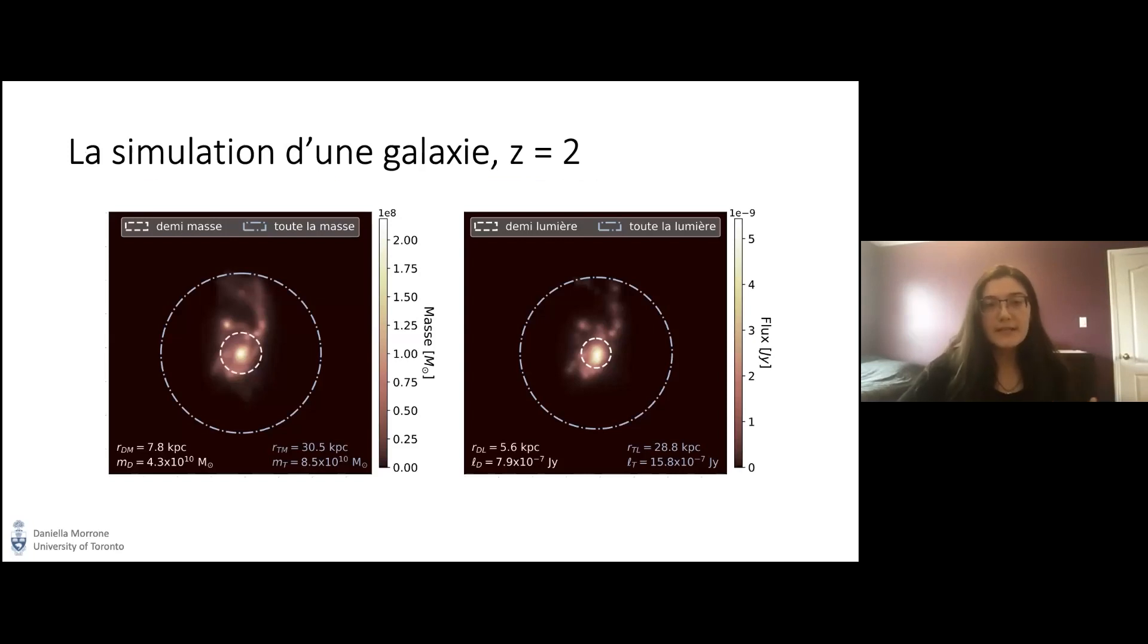J'ai calculé les rayons demi-lumière et demi-masse pour la simulation d'une galaxie au décalage vers le rouge z = 2. Ces deux rayons sont les ouvertures qui contiennent la moitié de la lumière et de la masse respectivement.